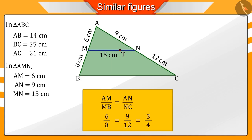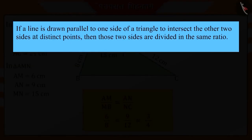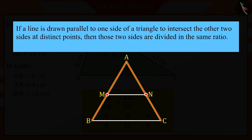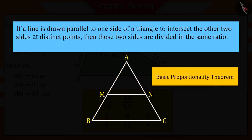Based on this activity, we can say that if a line is drawn parallel to one side of a triangle to intersect the other two sides at distinct points, these two sides are divided in the same ratio. And this is known as the Basic Proportionality Theorem.